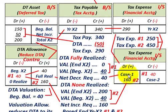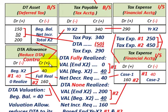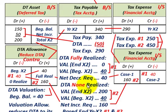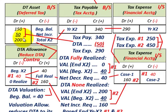And an increase in your valuation account — a credit — is going to increase your tax expense. That takes us through our example where we had to deal with setting up this deferred tax allowance account. We had a beginning balance, and you had to adjust that beginning balance depending on what you were going to realize in your deferred tax asset.